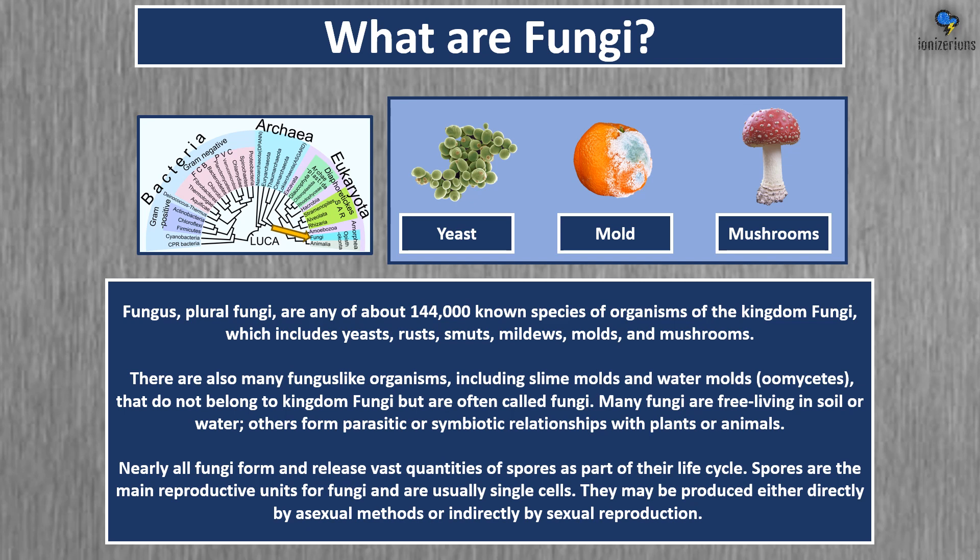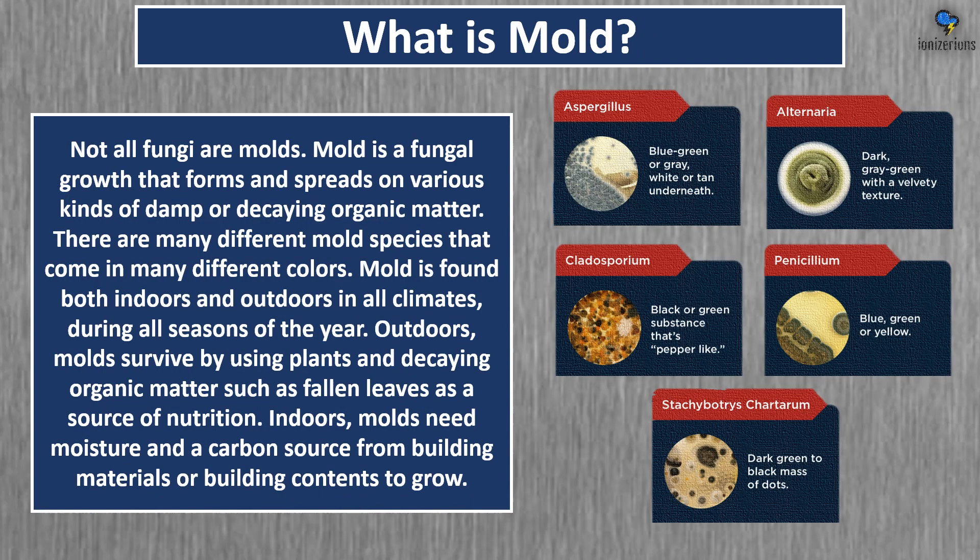Many fungi are free-living in soil or water. Other forms are parasitic or symbiotic with plants or animals. Nearly all fungi form and release vast quantities of spores as part of their life cycle. Spores are the main reproductive units for fungi and are usually single cells. They may be produced by asexual or sexual reproduction.